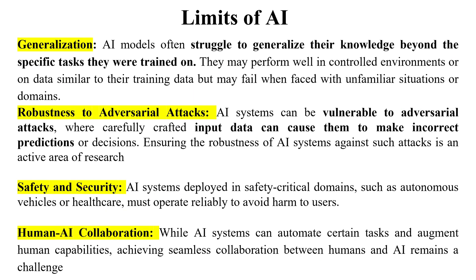The fourth limit is generalization. AI models often struggle to generalize their knowledge beyond the specific task they were trained on. The data on which an AI model is trained limits what it knows. They may perform well in controlled environments or on data similar to their training data, but may fail when faced with unfamiliar situations or domains.